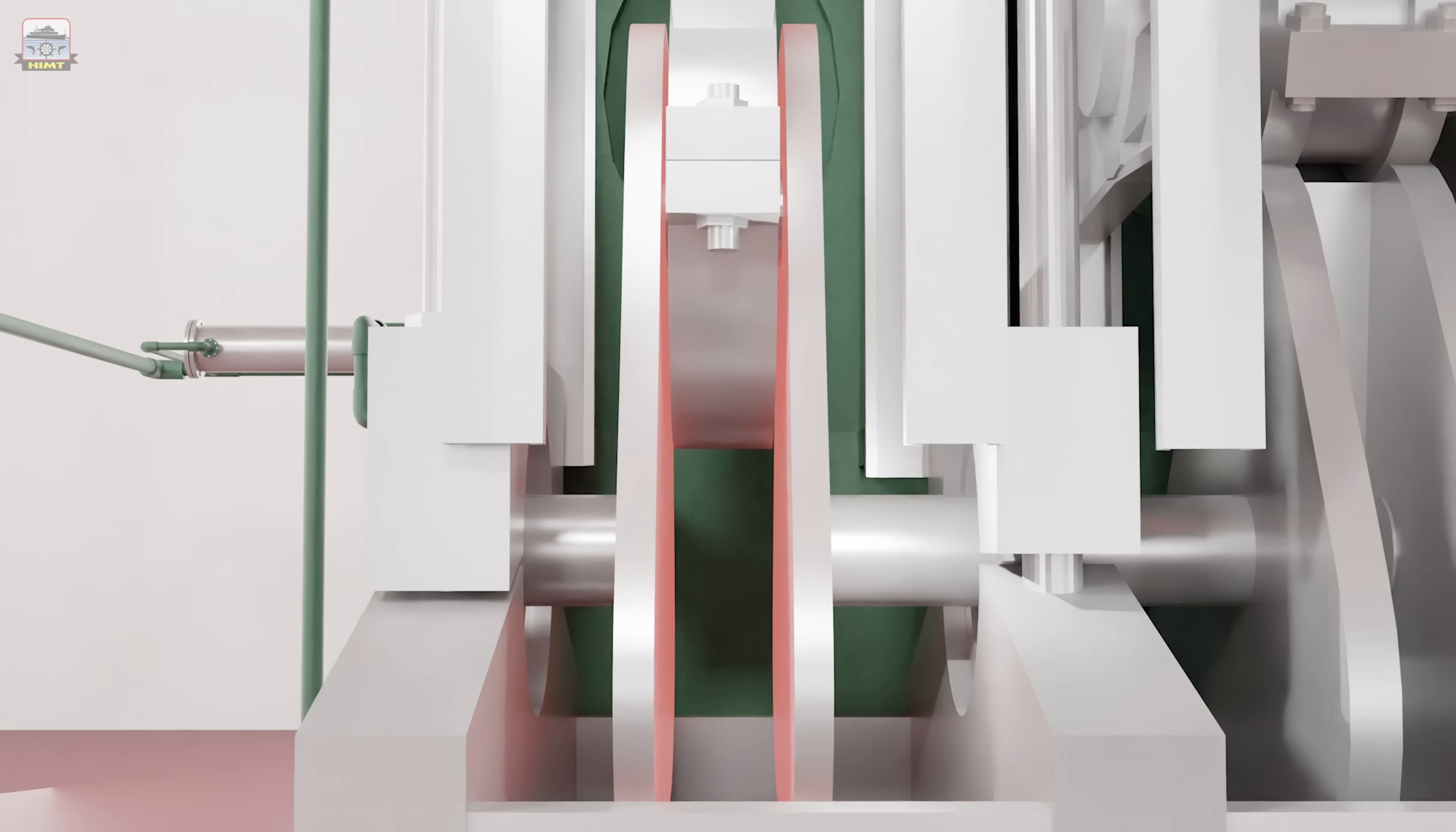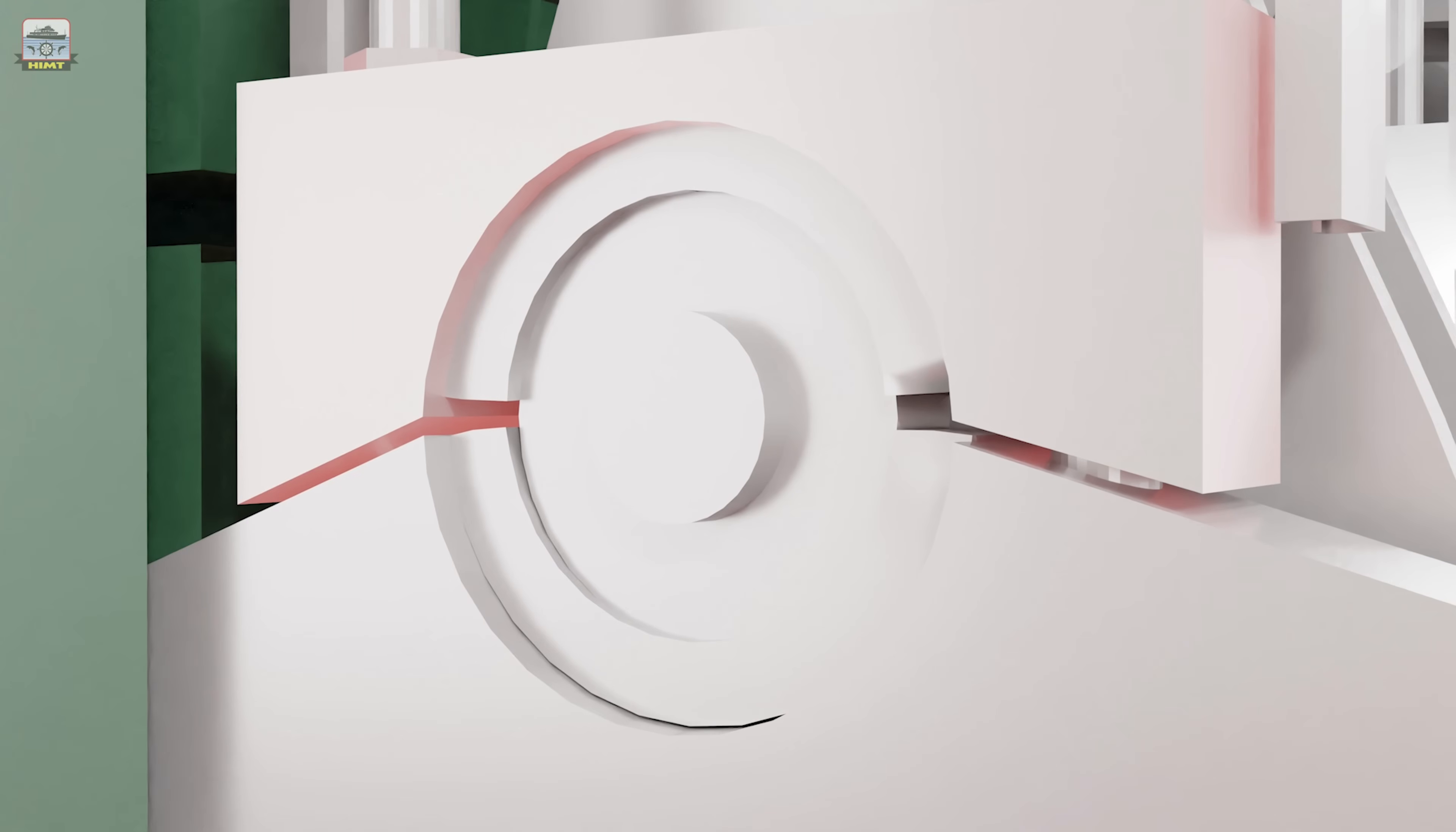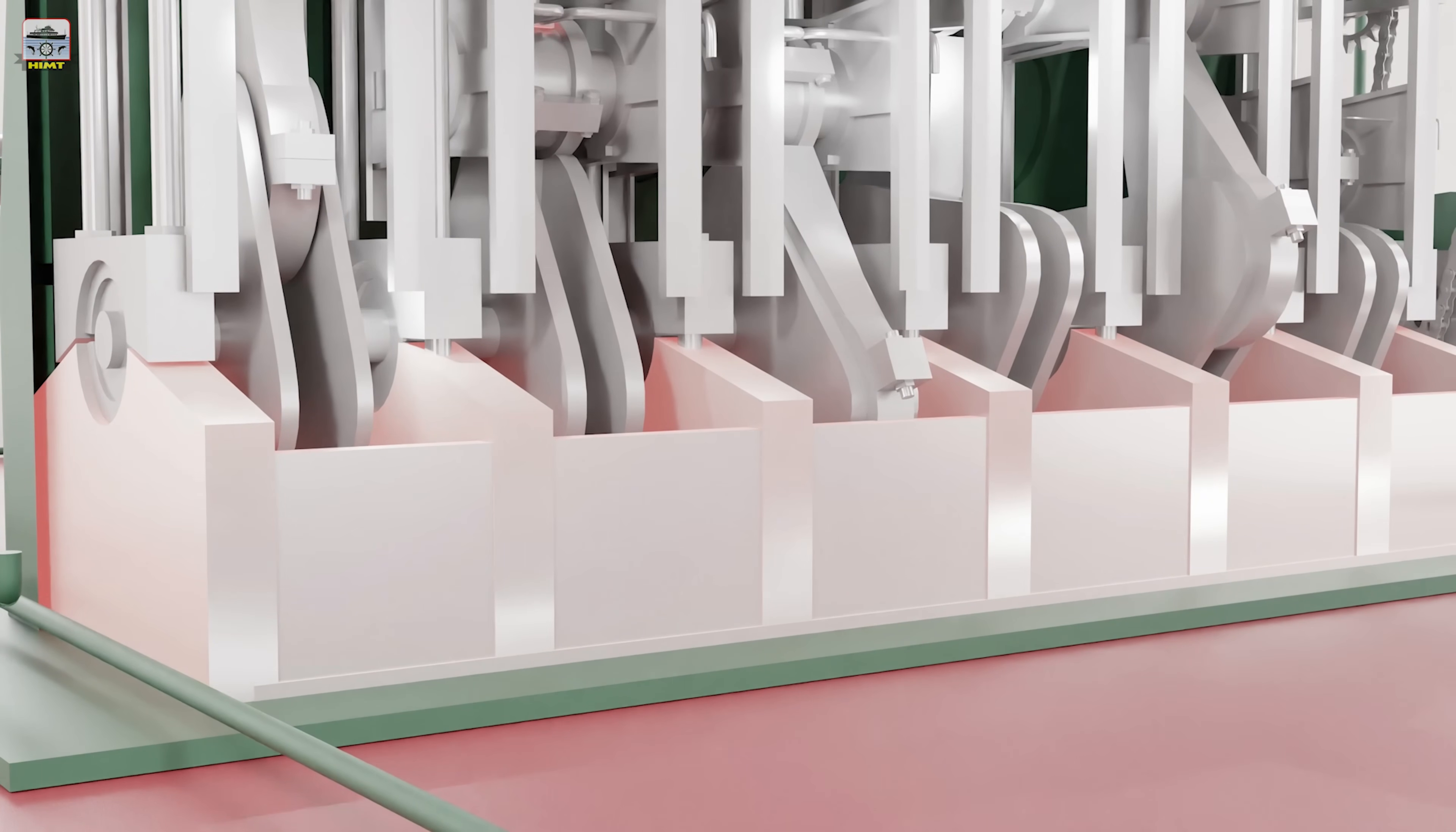The crankpin is fitted between the crank webs. The crankshaft is a key component of an engine transmitting cylinder power to the propeller shaft. It converts the oscillating motion of connecting rod to rotatory motion of the shaft. The crankshaft is supported on the main bearings which are located on the transverse girders of the bed plate.